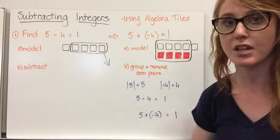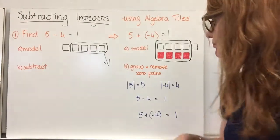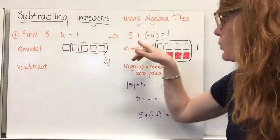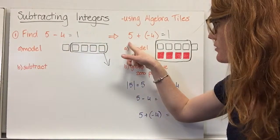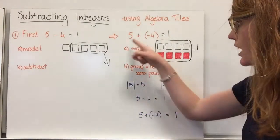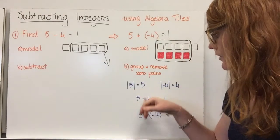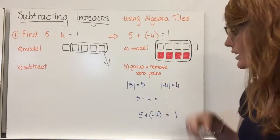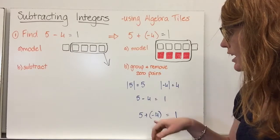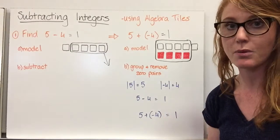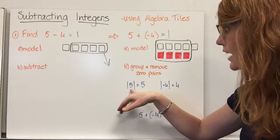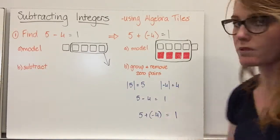When we subtract an integer, we can get the same answer by adding its opposite. To verify this using key concepts: when adding different signs, we find the absolute value of each integer. The absolute value of five is five; the absolute value of negative four is four. We subtract: five subtract four equals one. The sum has the sign of the integer with the greater absolute value, which is five — positive. So five plus negative four equals one.